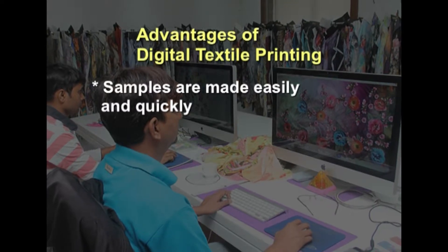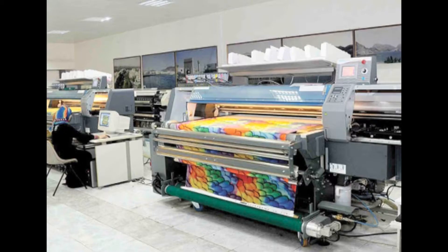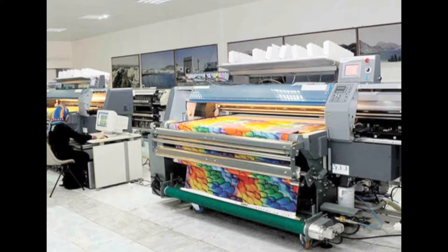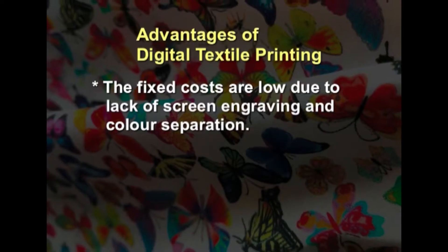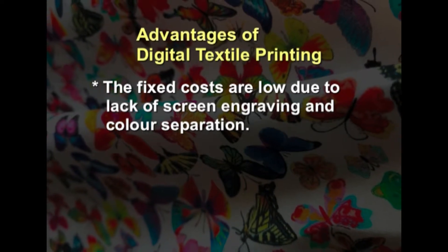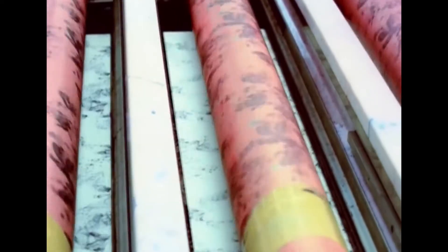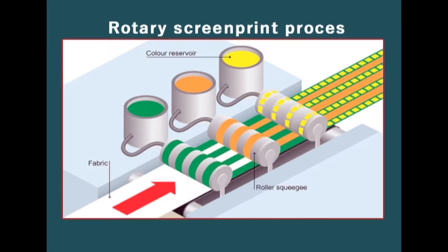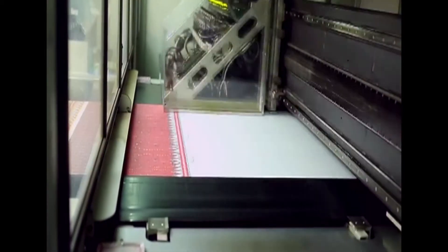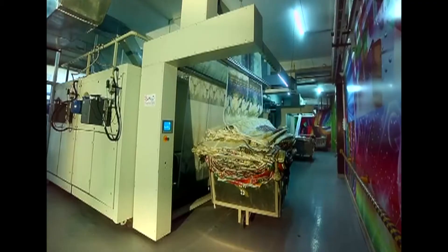Samples are made easily and quickly as there is no need to make screens and print samples. Therefore, the cost of sampling is also low when compared to rotary screen printing or automatic screen printing. The fixed costs are low due to lack of screen engraving and colour separation. Otherwise, the costs are too high in case of rotary screen printing because the screens and cylinders have to be made independently for each colour. In this case, there is no need for making any cylinders or screens, and time is also saved.